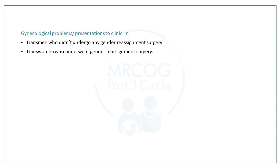Trans men are advised to undergo hysterectomy after four to five years of testosterone treatment, due to the risk of endometrial hyperplasia leading to endometrial cancer. They should also be counselled on bilateral salpingo-oophorectomy with the hysterectomy, which removes the gonads and naturally eliminates estrogen and progesterone — an added benefit. This operation requires two opinions from the multidisciplinary team. The surgical route — vaginal or laparoscopic — depends on any subsequent gender reassignment surgery planned, so it should be decided in conjunction with the surgeon to minimize scarring.